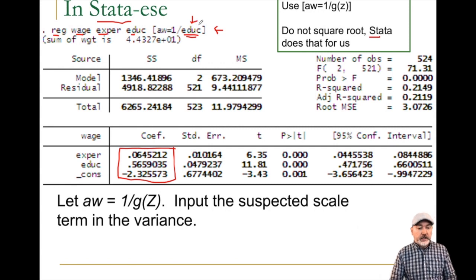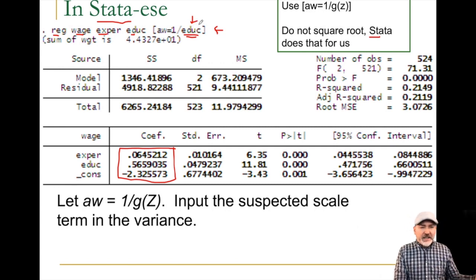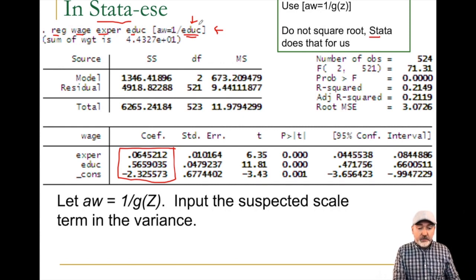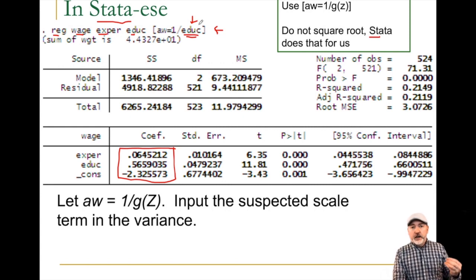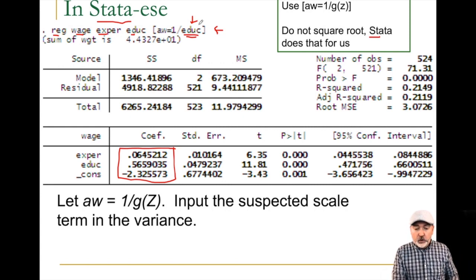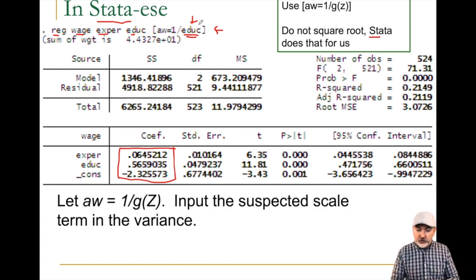This makes it much easier to go through the trial-and-error process — you just plug in different values and versions of your variables into that analytical weight. There are more sophisticated ways of doing this, including ways of estimating an optimal g of z function — what we'd call a feasible weighted least squares option — but we won't look into that here.